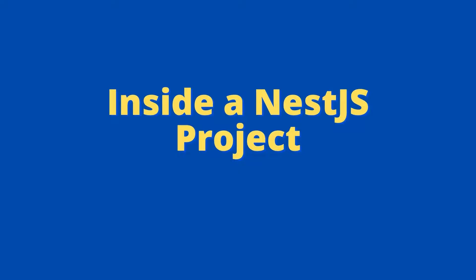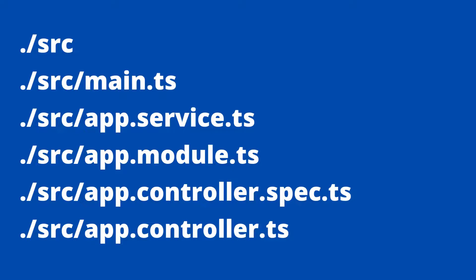When we scaffold a project using the Nest CLI, we get a project directory with a bunch of subfolders and files. The core files are present in the source directory itself. The app.controller.ts is a basic controller with a single example route. app.controller.spec.ts contains the unit tests for the controller. app.module.ts is the root module of our NestJS application. app.service.ts is a demo service class with a single method. main.ts is the application entry file that creates the NestJS application instance. All of these are TypeScript files.